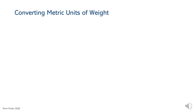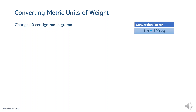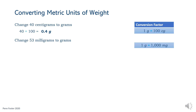Changing metric weight units follows the same steps, except units for the next problems measure weight instead of distance. Since each 100 centigrams make 1 gram, this problem calls to change small units, centigrams, to larger units, grams — divide by the conversion factor 100. There are 0.4 grams in 40 centigrams. Next, change 53 milligrams to grams. Again, this problem changes small units to larger units, so divide 53 by 1,000. The answer is 0.053 grams.